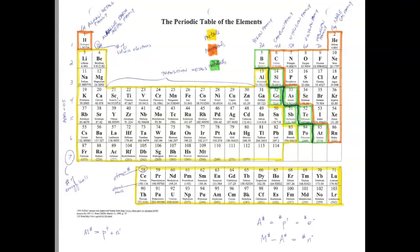After labeling that, you're going to identify the different family names. Column 1A is the alkali metal family, and 2A is the alkaline earth metal family. The last two special families are 7A, which is the halogen family, and 8A, which is the noble gas family.